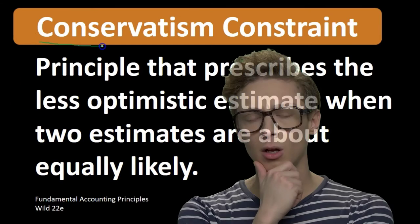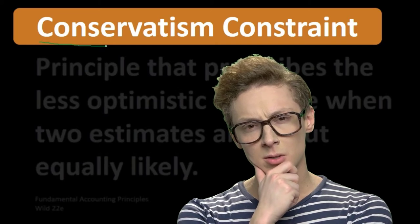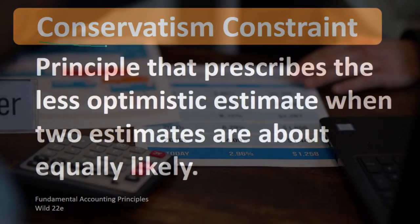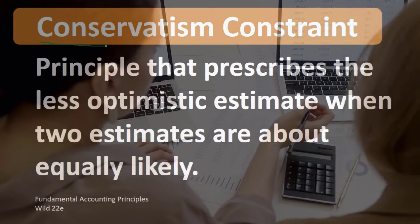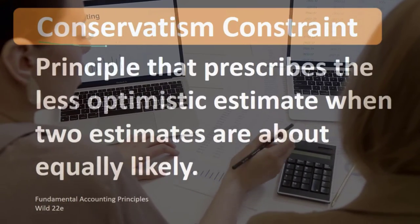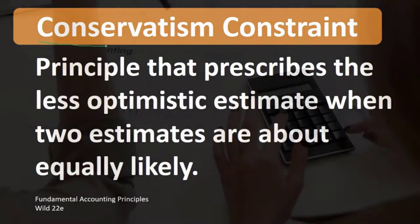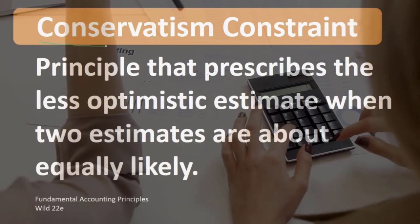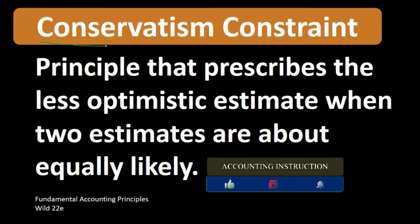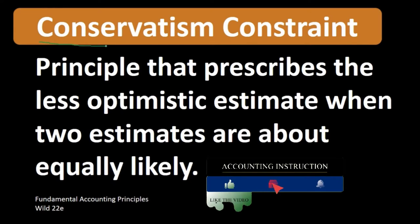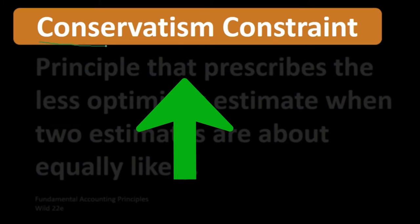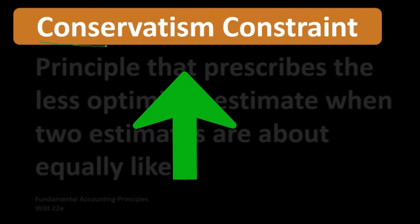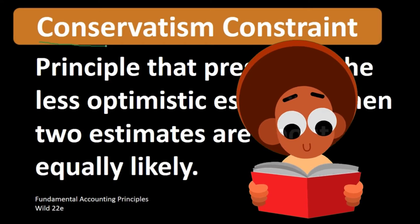When we think about a conservatism constraint or conservatism principle in the context of accounting, we're really looking to err on the side of the financial statements basically looking worse. We don't want to overstate assets and we don't want to understate liabilities, because overstating assets or understating liabilities will make the financial statements appear better than they actually are. We would rather, from a policy standpoint, understate the financial statements rather than deceive readers by overstating them.